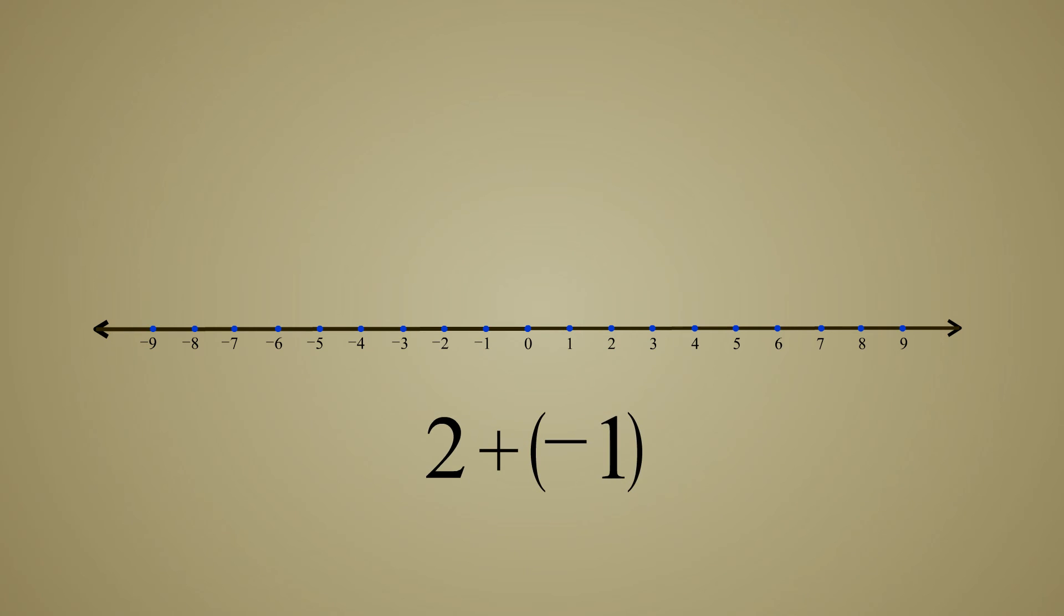Adding a negative integer means moving that number of units to the left. In fact, adding a negative number is exactly the same thing as subtracting a positive number. So we can think of subtraction as just the addition of a negative number.